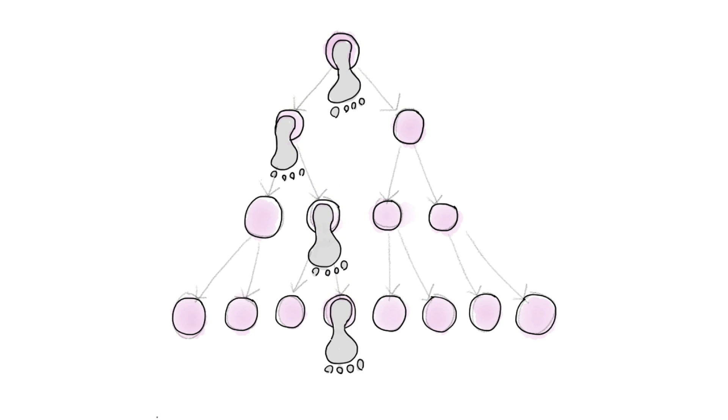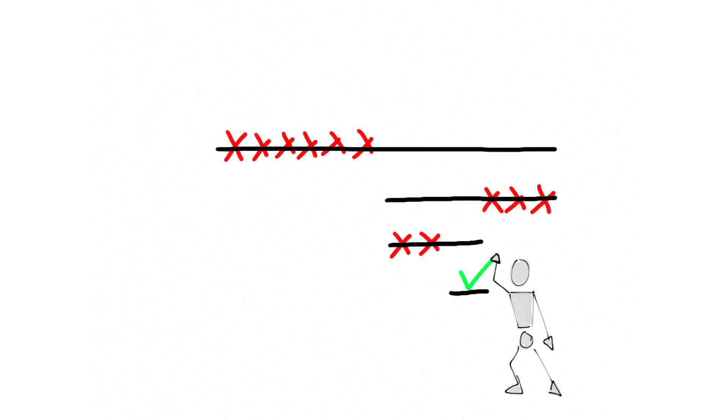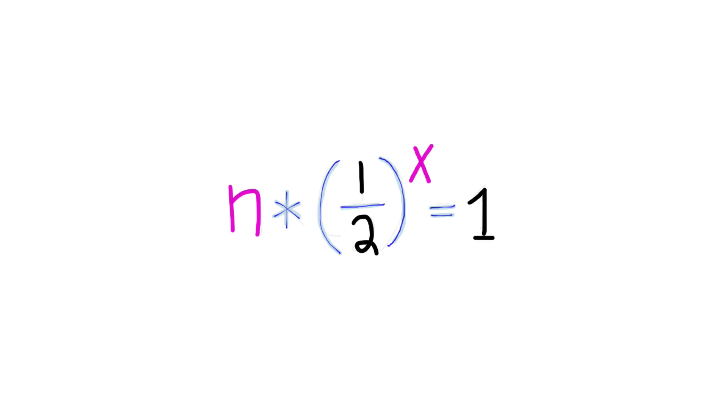With just a few steps, it looks pretty efficient. But how efficient exactly? As efficient as binary search? There is a mathematical way to compare the two. First, let's quantify binary search.